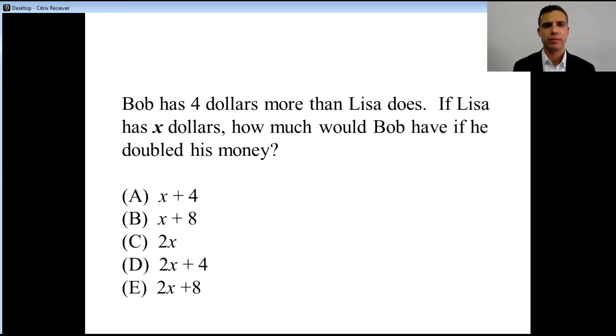Bob has $4 more than Lisa does. If Lisa has X dollars, how much would Bob have if he doubled his money? Notice that we don't know how much money Lisa has, and we don't know how much money Bob has. Because we don't know either of these two values, we can choose a number and plug it in.